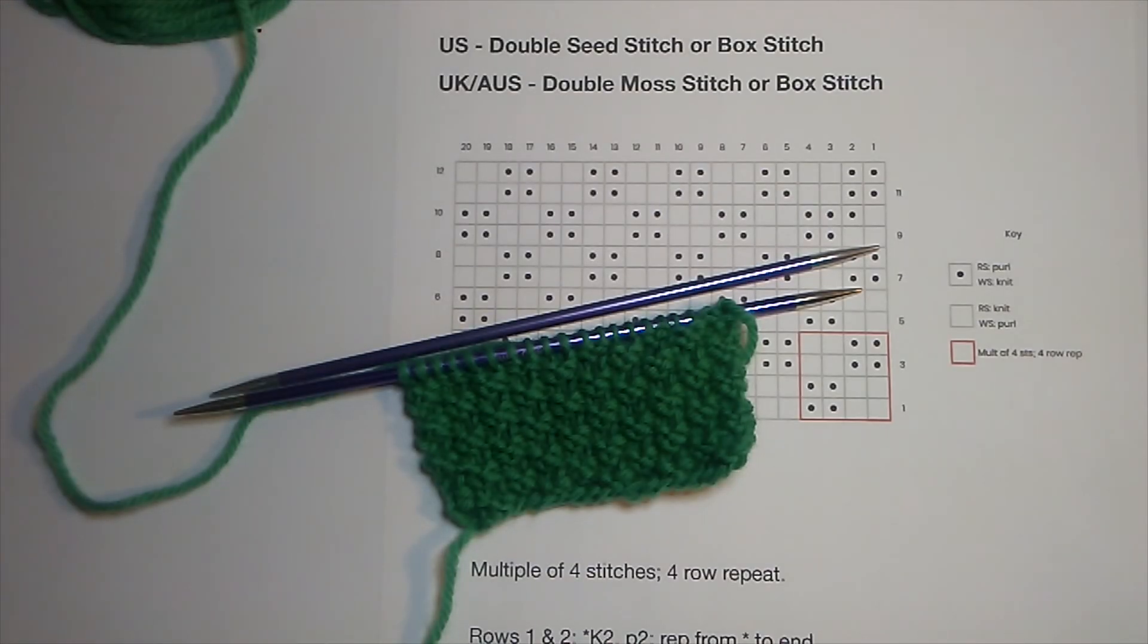In this video we're going to look at double seed stitch, which can also be called box stitch, or if you're in the UK or Australia you might hear it referred to as double moss stitch or box stitch. It has lots of different names, but it's the same pattern.